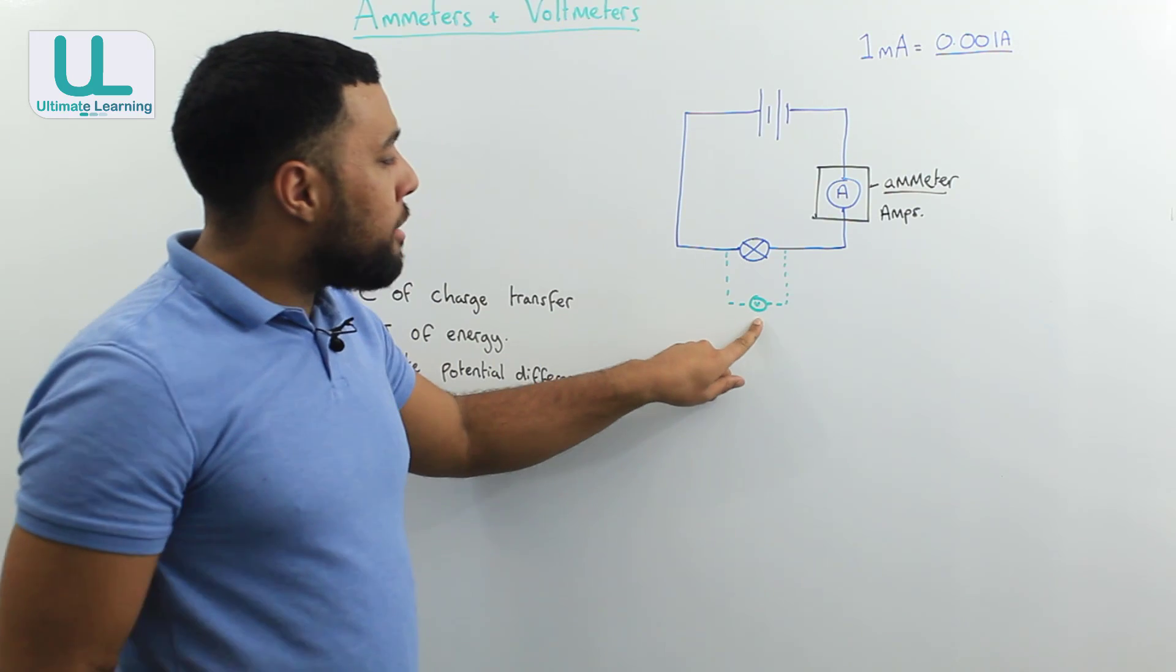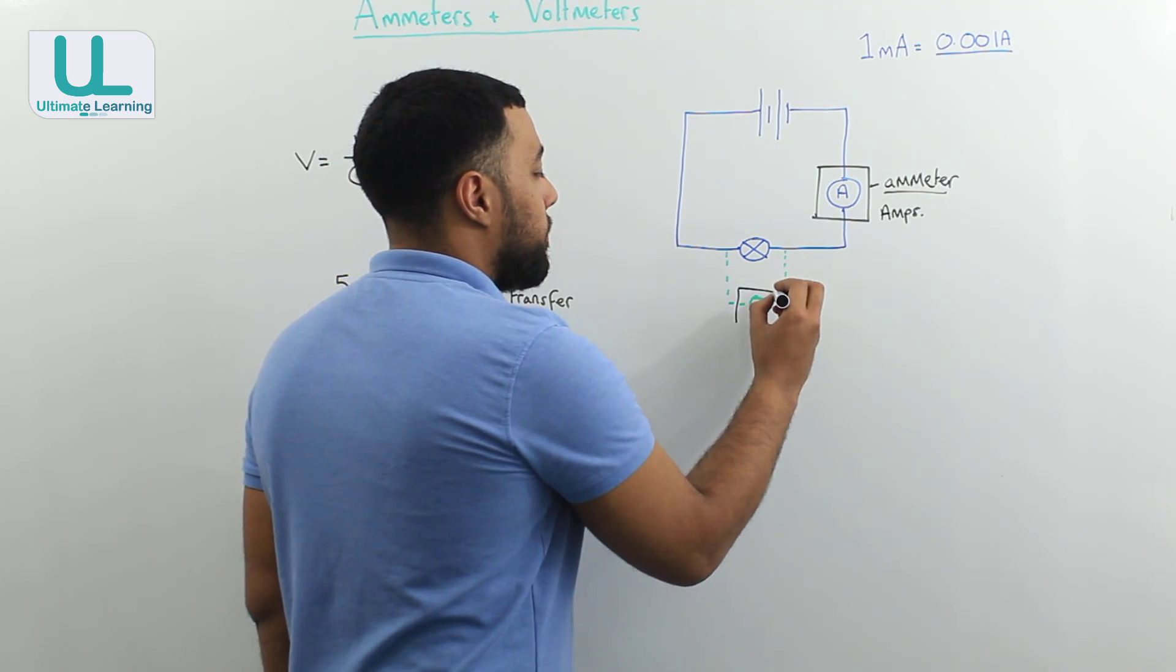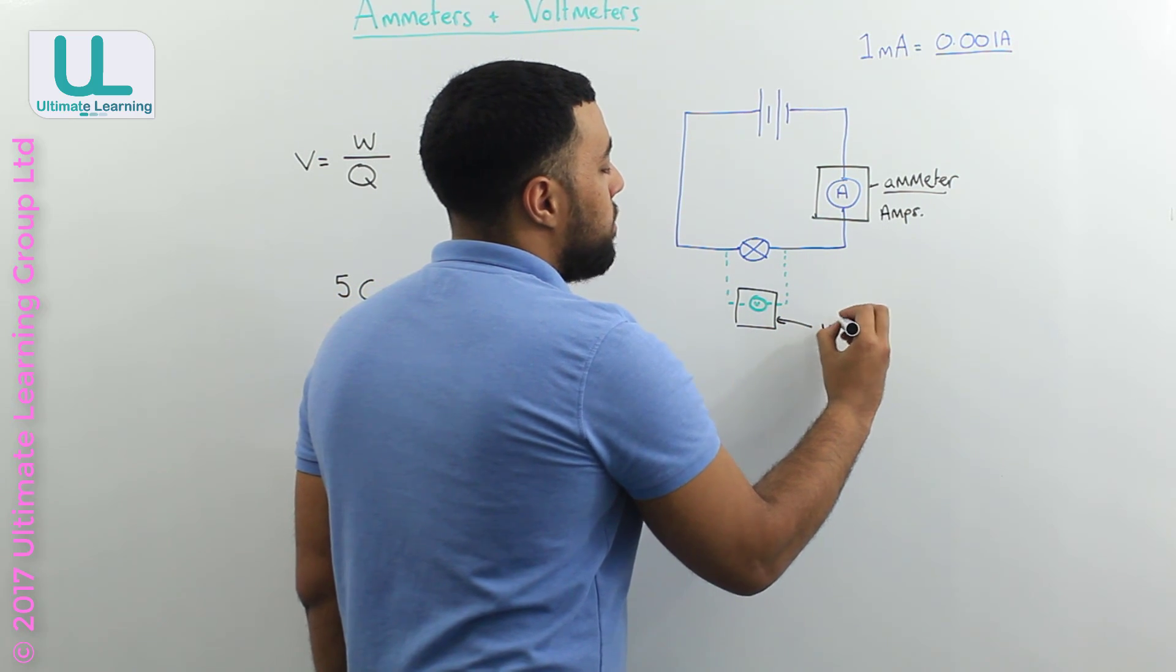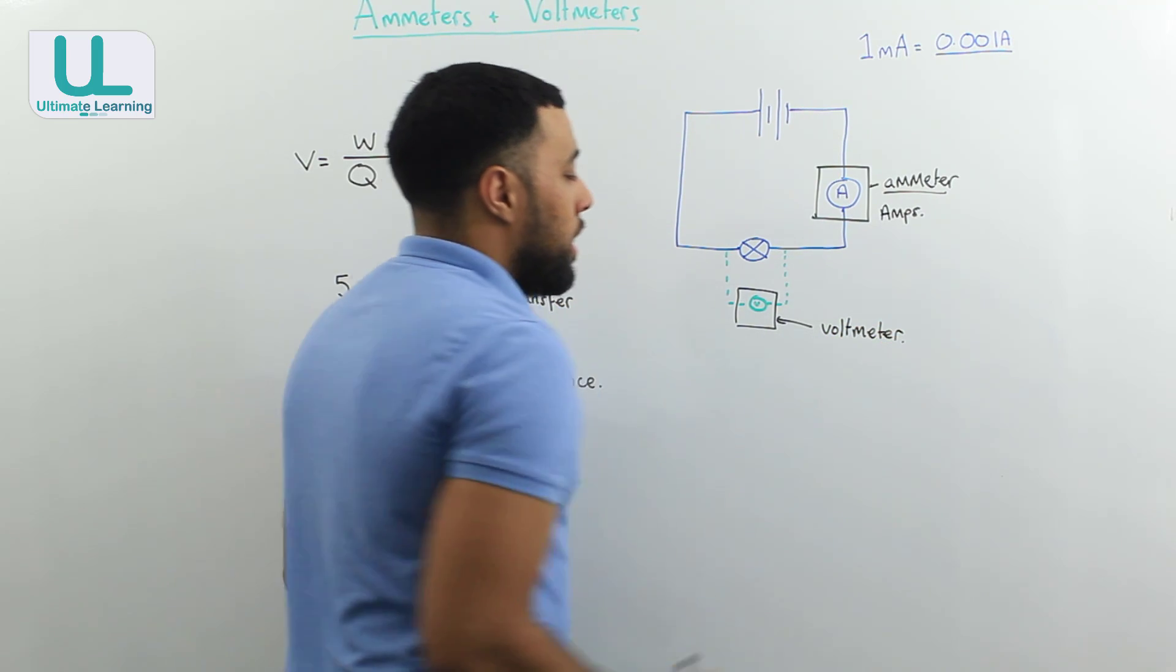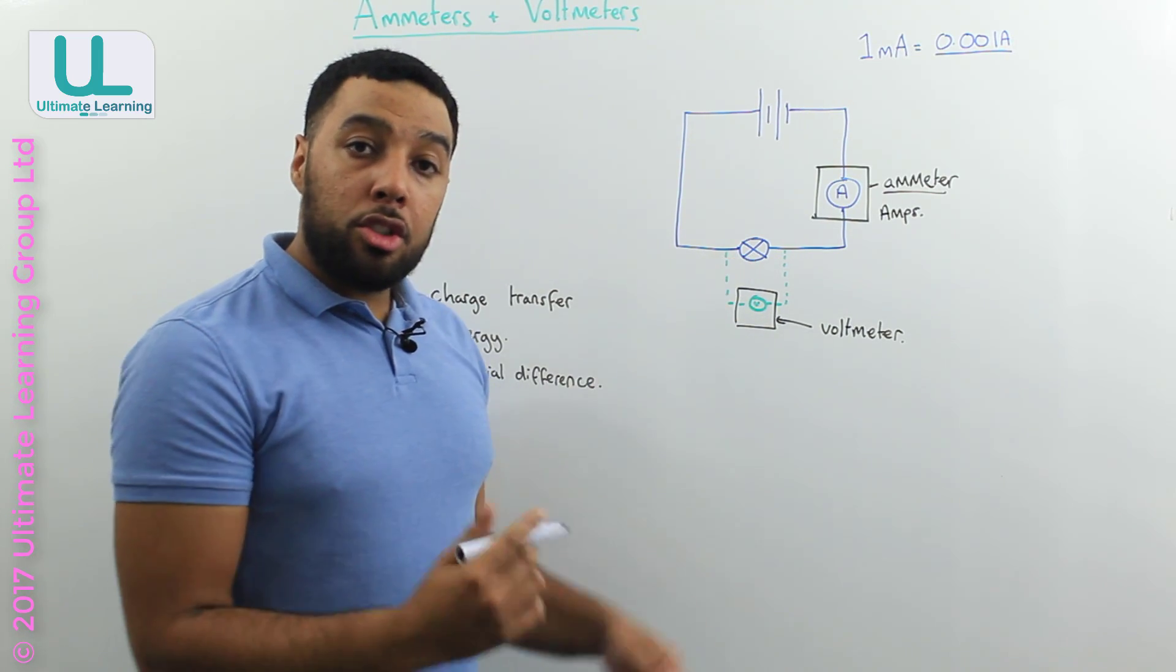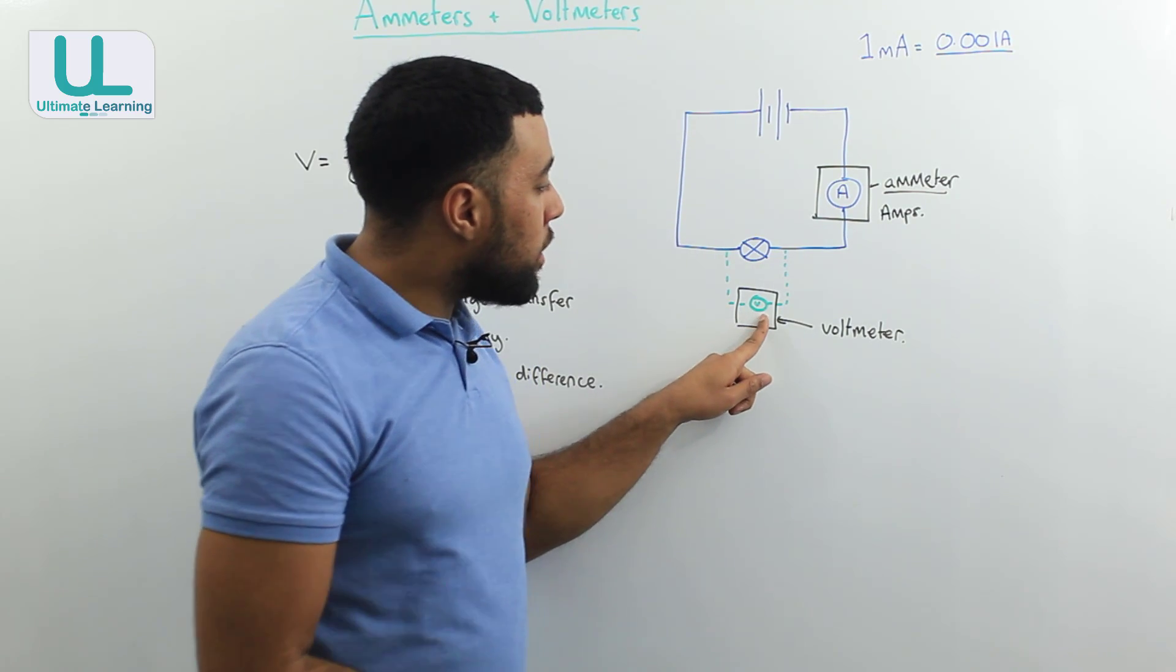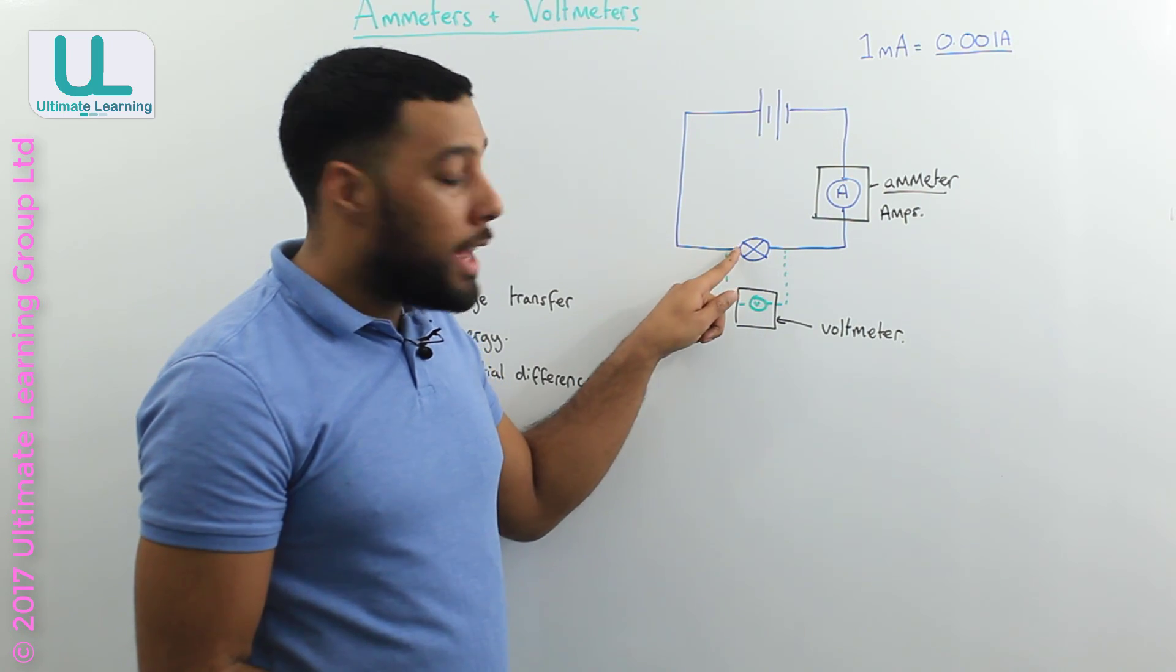What about this component here? Well, this component here is called a voltmeter. And you can see that the voltmeter is placed parallel to the components. That's because the voltmeter measures the potential difference across a component.